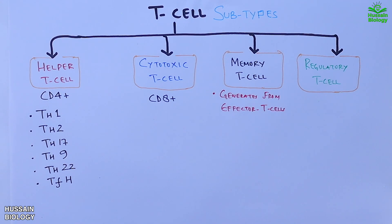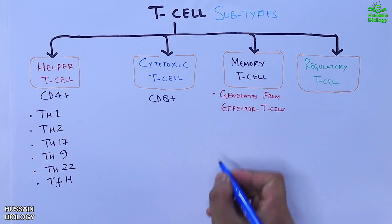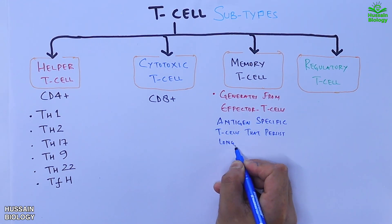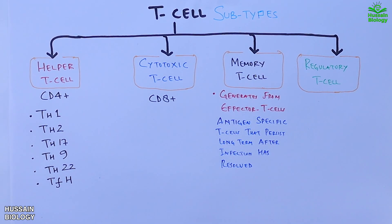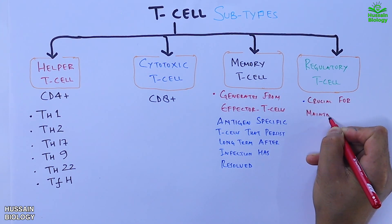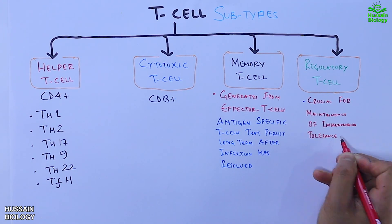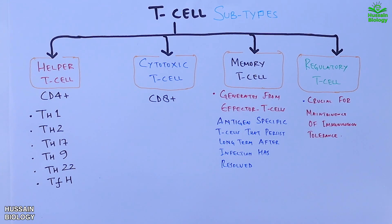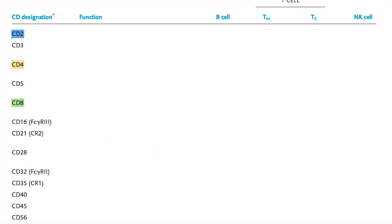Memory T cells are generated from effector T cells. These are antigen-specific T cells that persist long-term after an infection has resolved. The regulatory T cell is crucial for the maintenance of immunological tolerance — these regulatory cells suppress the activation of the immune system. Now let's look at the CD marker table, which shows CD markers on the left, their functions in the middle, and lymphocyte types on the right indicating presence or absence.